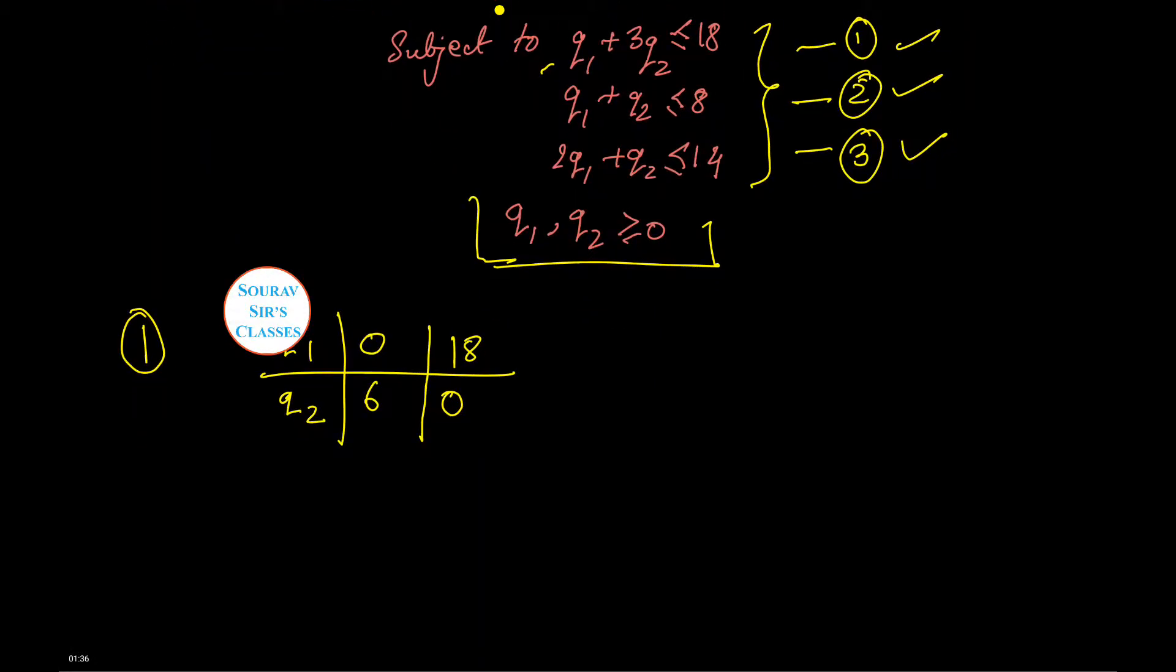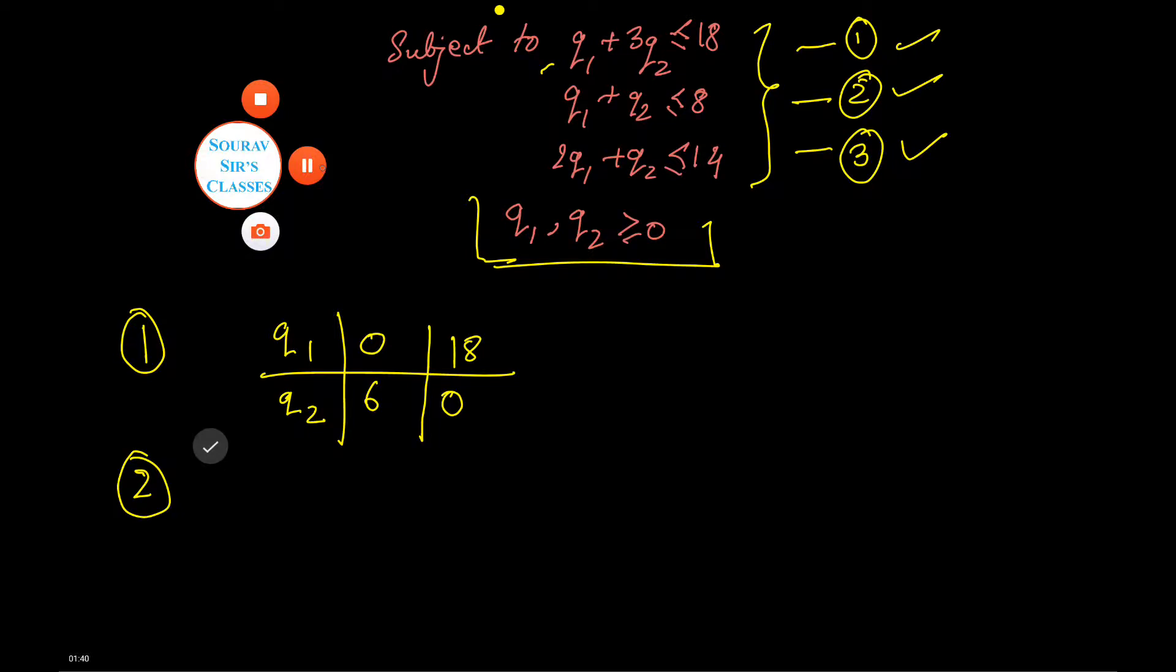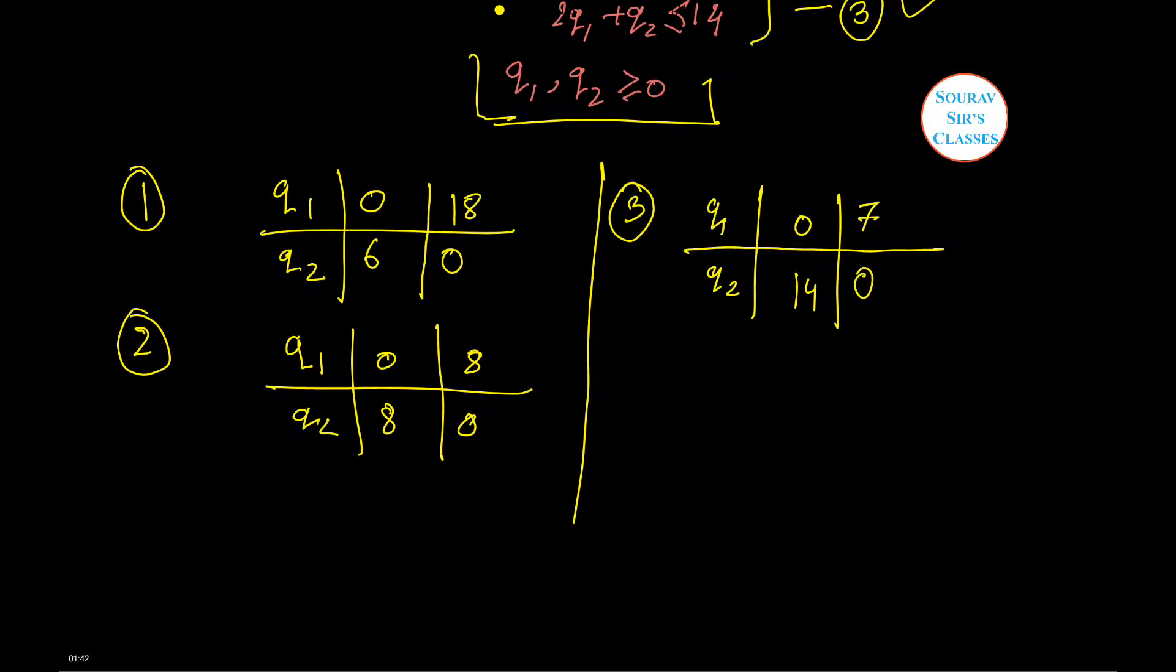Let us do this for equation number 2 also. Now similarly doing it for equations 2 and 3, when Q2 is 0, Q1 is 7 and Q2 is 14 when Q1 is 0. Now I'll be drawing the diagram of the LPP so that you can see these constraints very clearly.